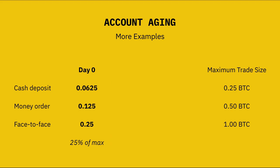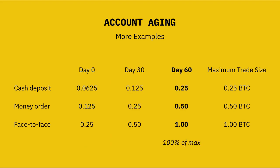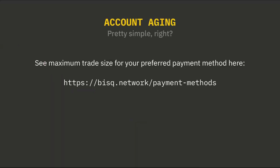Here at day zero, you can see all limits are different. But 30 days into the future, all limits have doubled. And then at 60 days, all limits have doubled again. So that's account aging. To see a full list of payment methods that you can use on Bisq and their maximum trade limits, check out the link on the screen.